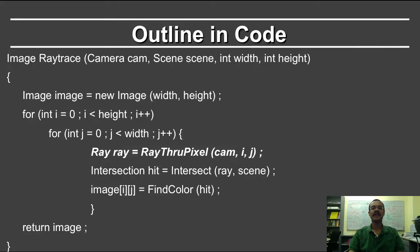Notice the outline in the code that I've shown here. What we're interested in in this lecture is this part: How do I shoot a ray so that it goes through a given pixel, i j, in the image plane?